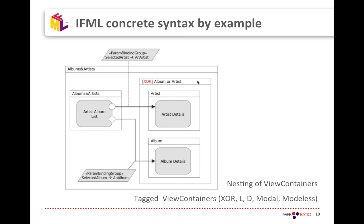The complexity of models can be increased. In this example you have a list containing both albums and artists, with two events: you can click on an artist and follow one path, or click on an album and follow another path. An XOR container indicates that these two sub-containers are shown in mutual exclusion depending on which event you triggered and which flow you followed.